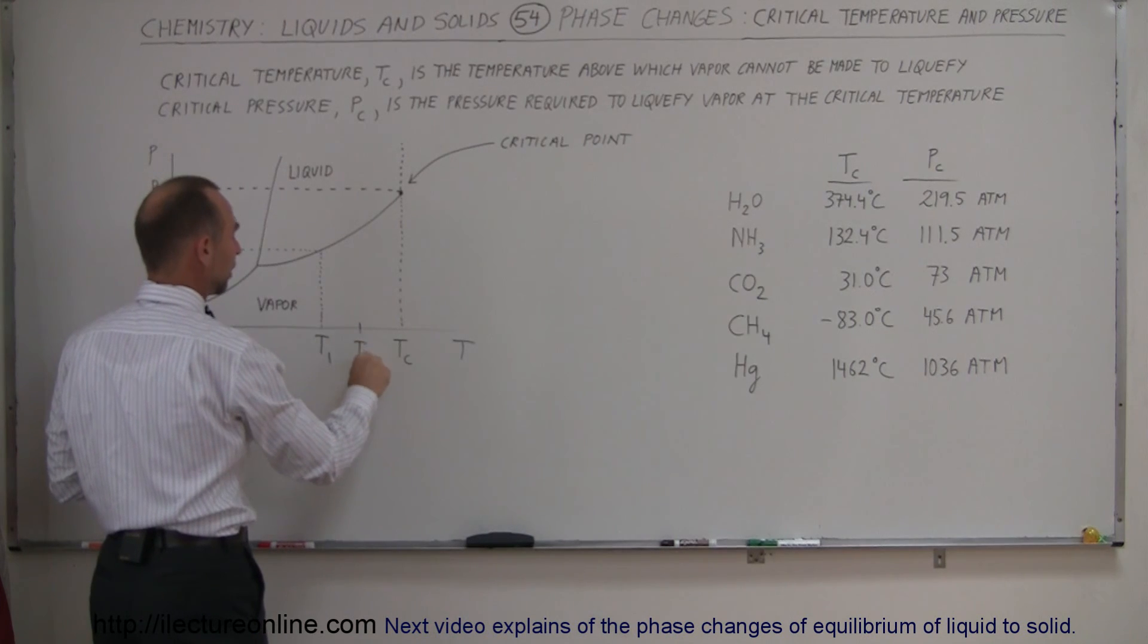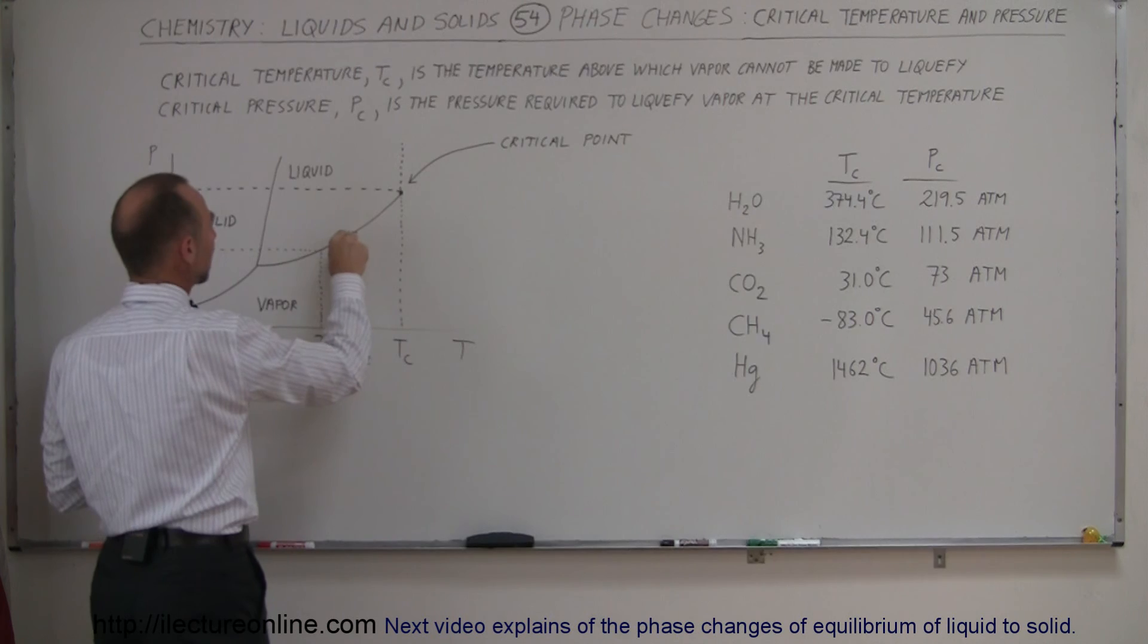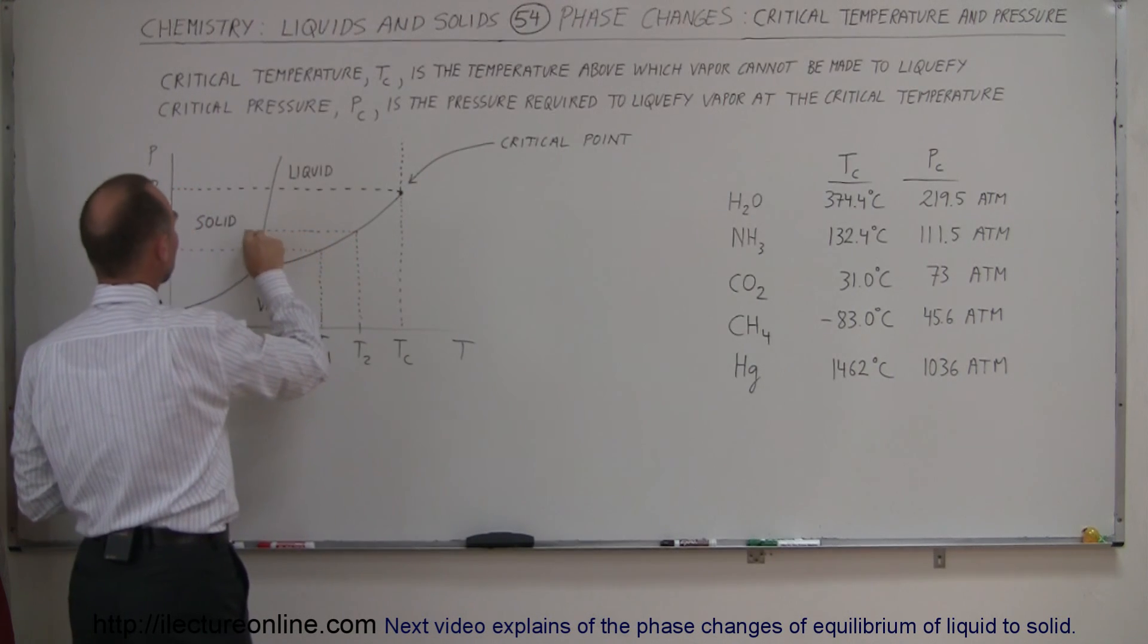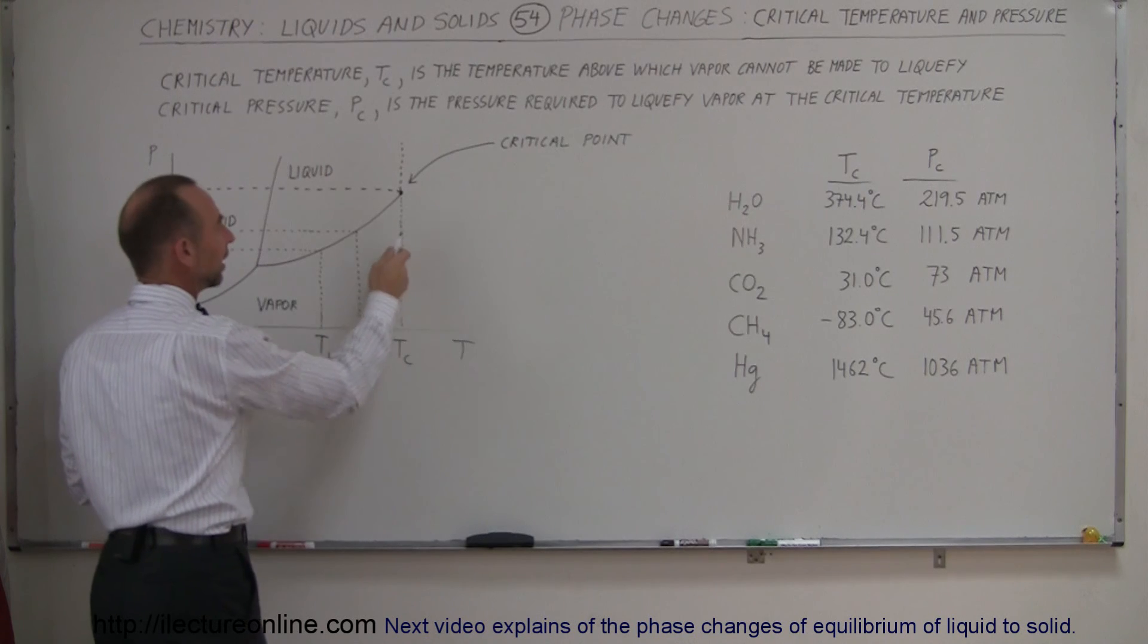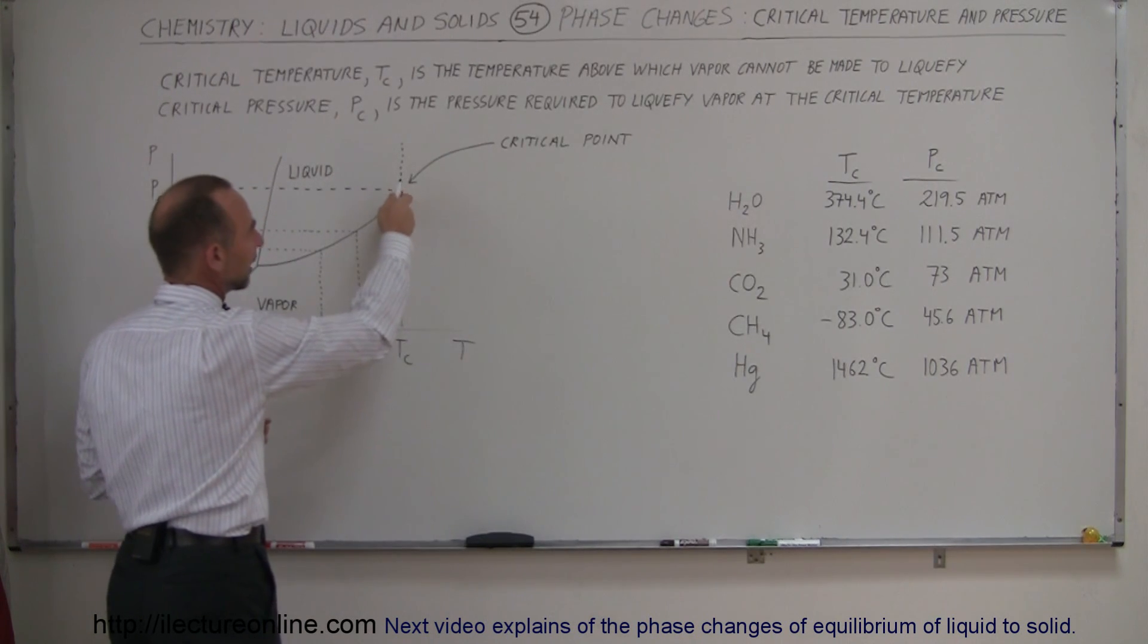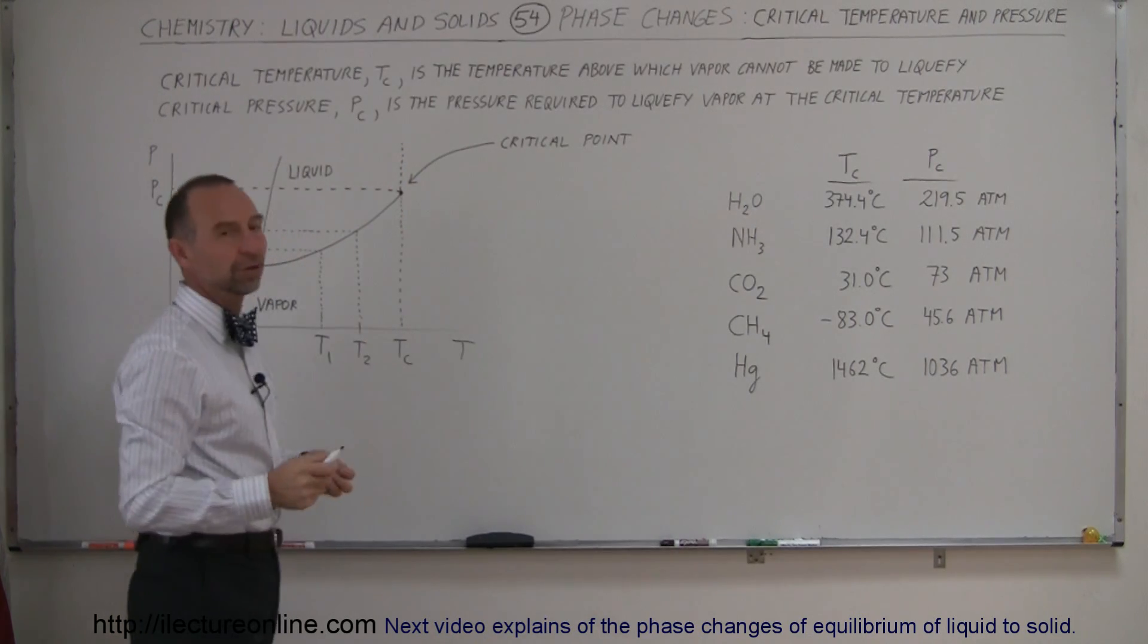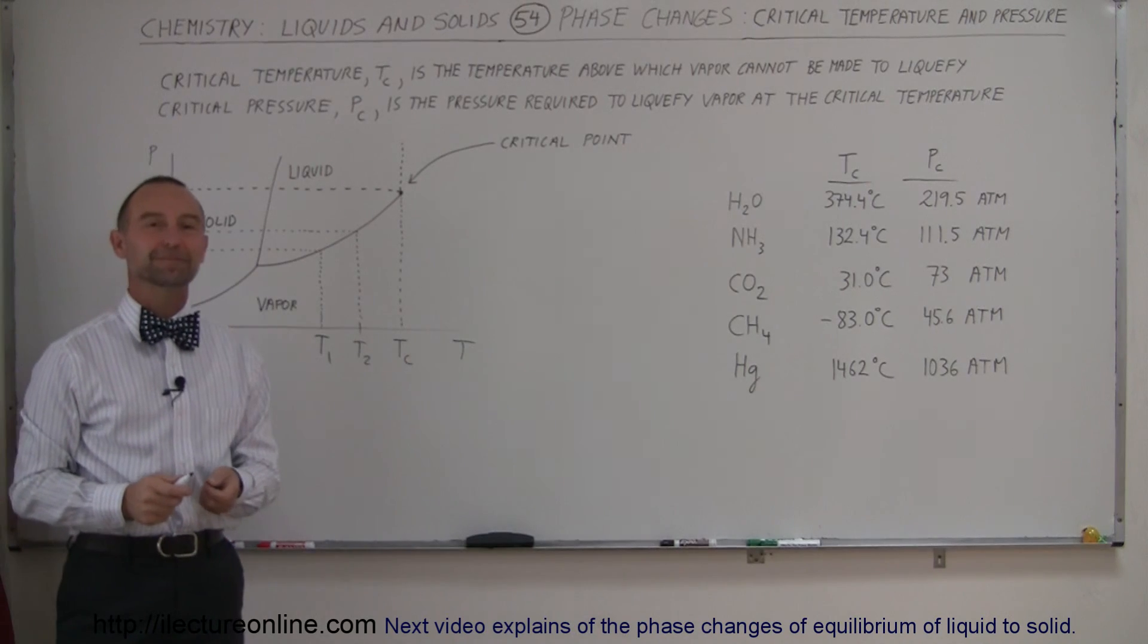If you then increase the temperature to T2, notice, then that would require a greater pressure for the vapor to turn into liquid and so forth. And eventually, the highest pressure required would be what we call the critical pressure. And then any temperature beyond that, no pressure will make that into a vapor. Okay, hopefully that clears it up.